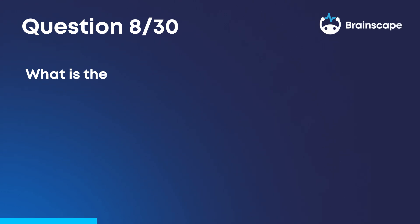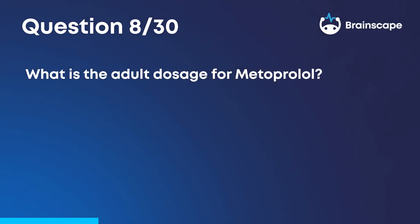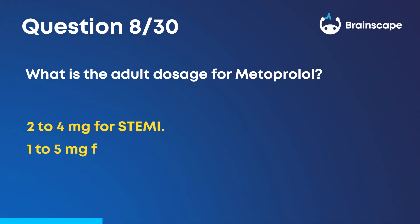Question 8. What is the adult dosage for metoprolol? 2 to 4 milligrams for STEMI. 1 to 5 milligrams for N-STEMI or unstable angina.